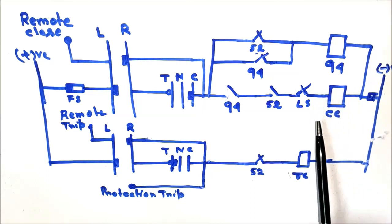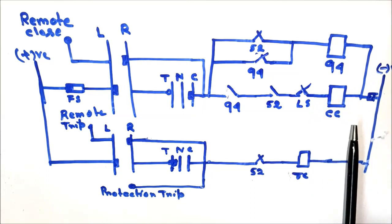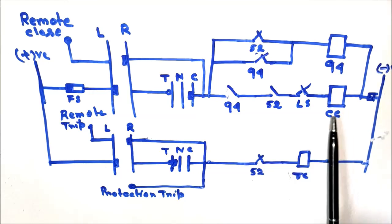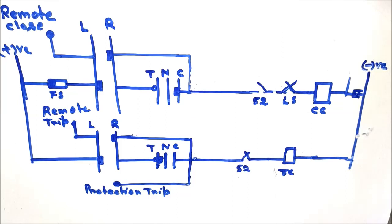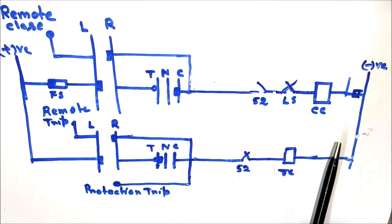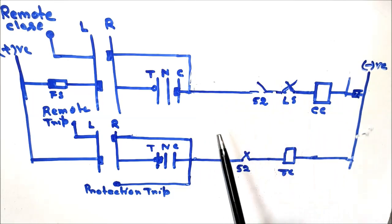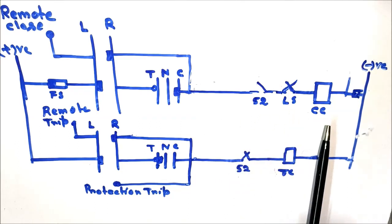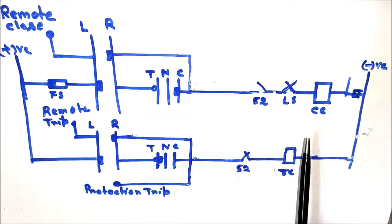Now, what is the hunting phenomenon and how does hunting happen in the case of a circuit breaker? In order to understand the hunting operation, let us remove the anti-pumping circuit in parallel with the closing coil and understand the hunting operation. Then we will discuss how the anti-pumping relay prevents the circuit breaker from hunting.